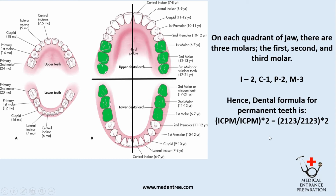We need to write the dental formula in such a pattern: incisor 2, canine 1, premolar 2, molar 3. It is the same for the maxillary and mandibular dentition. So the formula is 2123 over 2123, multiplied by 2 for the right and left halves. This is the human dental formula for permanent teeth.